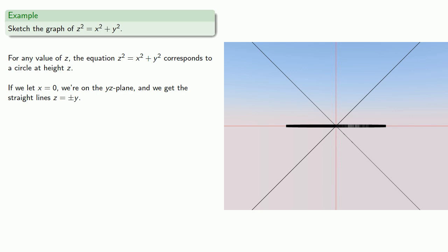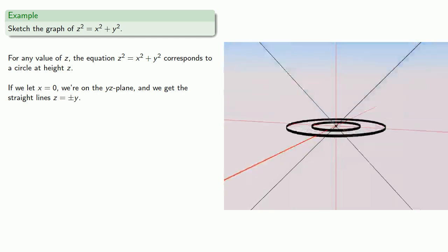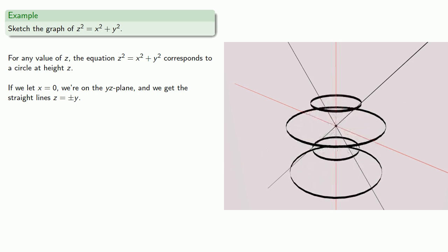And so what our surface has to look like... The circles are raised or lowered until they catch on these straight lines. And we connect the dots, or rather the curves, to form our surface. And we get a cone.